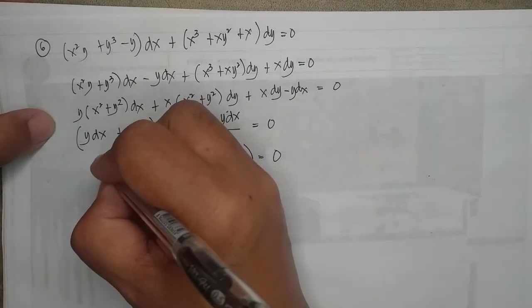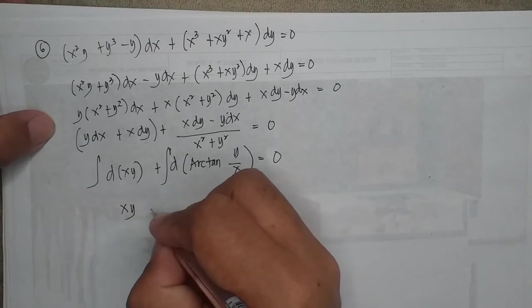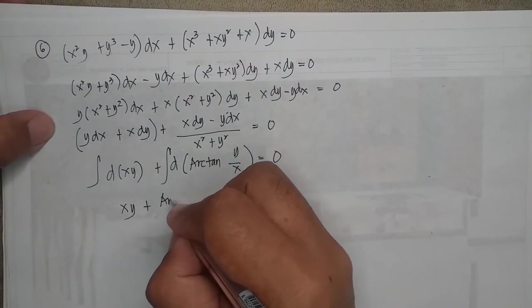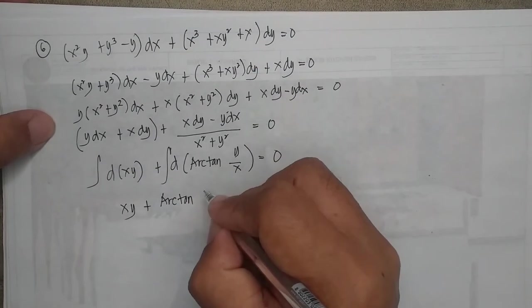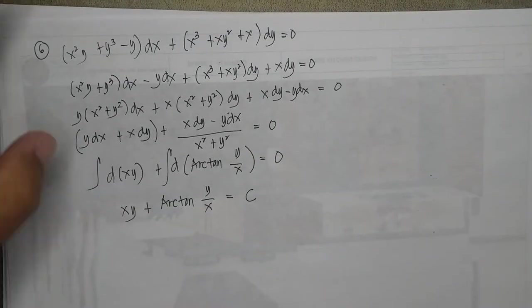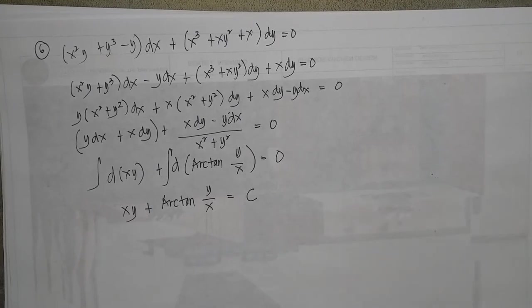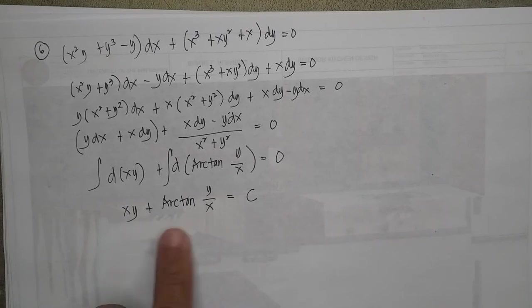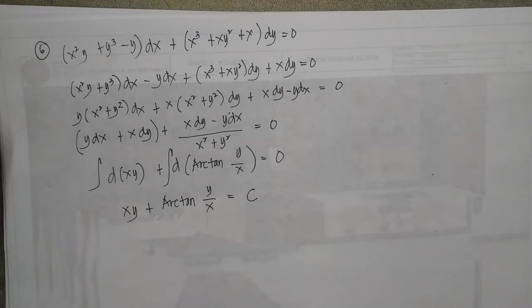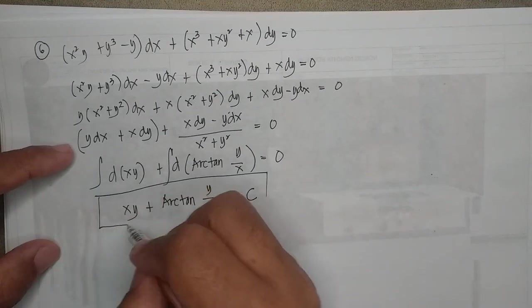Integrating this, we have xy plus arctan(y/x) = c. This is the solution for example number six.